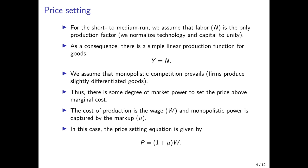If the price is above marginal cost, there will be profits for this firm. To capture this price-setting behavior, we have the price-setting equation, where the nominal wage is denoted by W, the price level by P, and the bargaining power of firms is denoted by mu. As a consequence, the price that the firm charges for its product would be 1 plus mu times W, where W is the marginal cost. The amount by which they can set the price above marginal cost is determined by the extent of market power of the firms.